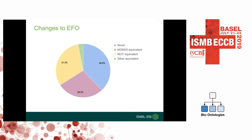As EFO is driven by user requests, some areas of EFO are richer than others. As a result, mapping the UK Biobank traits highlighted many areas requiring further development, such as the cancer branch. We're hopefully going to address this in the future using domain ontologies.